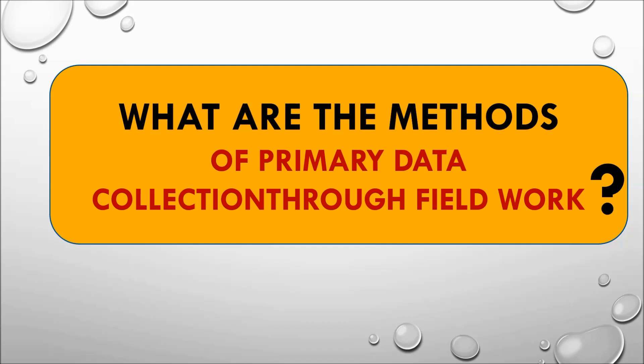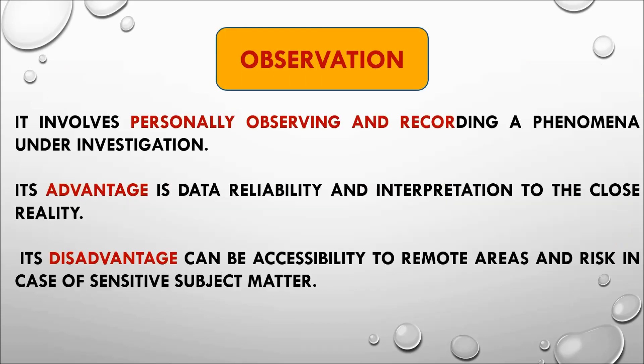What are the methods of primary data collection through fieldwork? The first method is observation, which involves personally observing and recording of phenomena under investigation. Its primary advantage is that it is reliable — it is first-hand information and you yourself are aware of what you actually need. Interpretation becomes really close to reality in observation, since it depends on how you perceive and observe things yourself.